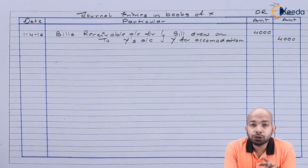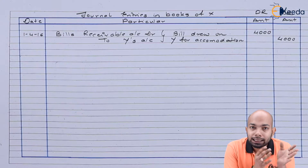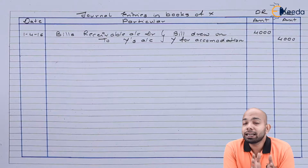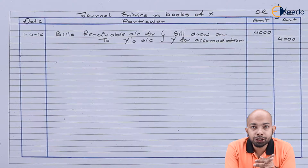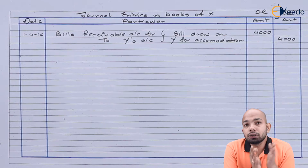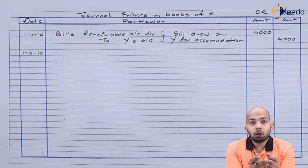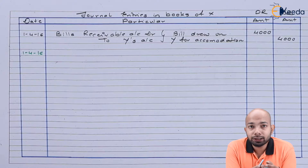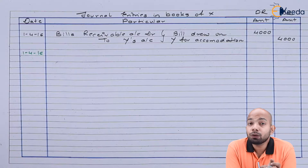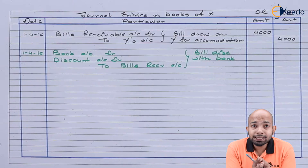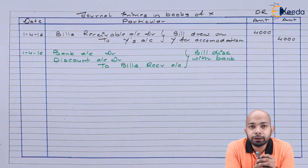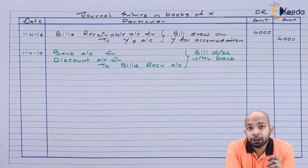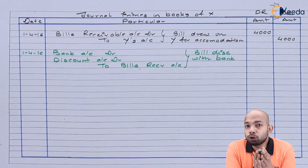The first entry to pass is on 1st April 2016, which states that X drew a bill on Y and Y accepted it for Rs 4,000. So that is: Bills Receivable Account debit to Y Account. On the same day, X discounted this bill and half the remit was sent to Y, so we'll pass entries for both. For the discounting with the bank, the discount mentioned was 6% per annum. So on Rs 4,000, figuring out 6% discount — for 12 months that comes to Rs 240.